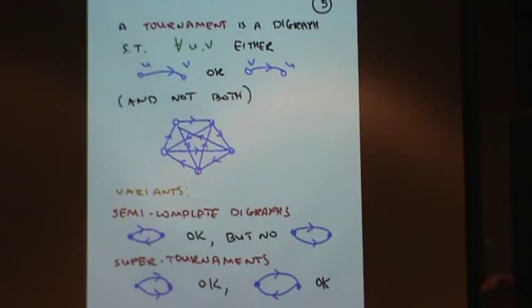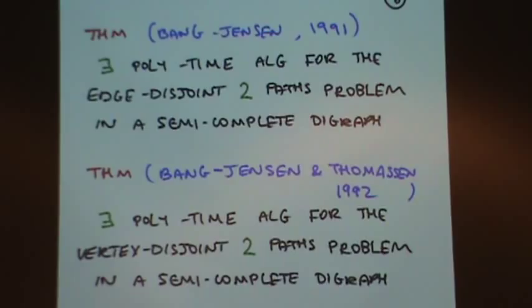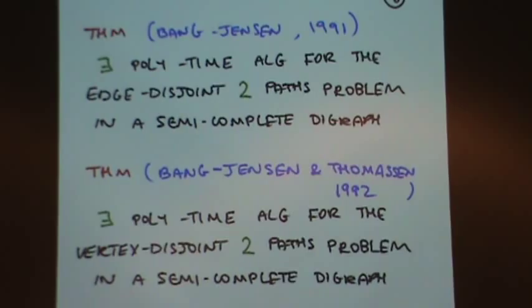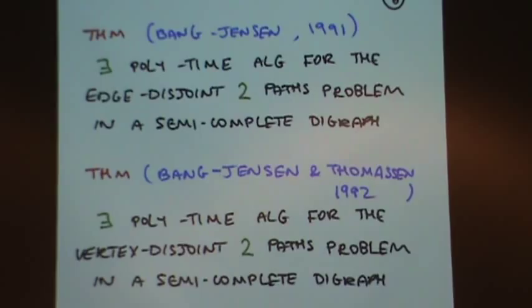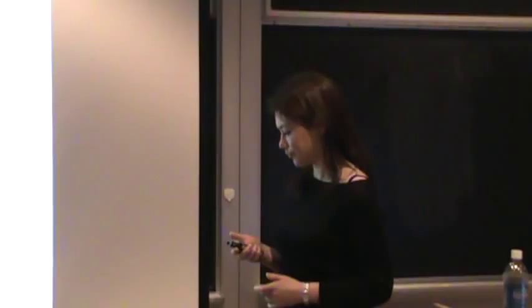We still haven't decided if we're thinking about edge disjoint or vertex disjoint. For two pairs of terminals, for K equals two, both the vertex disjoint case and the edge disjoint case are known to be polynomial. The edge disjoint case was done by Bang-Jensen in 1991, and then Bang-Jensen and Thomassen did the vertex disjoint case a year later. For general K, both problems were open until recently.